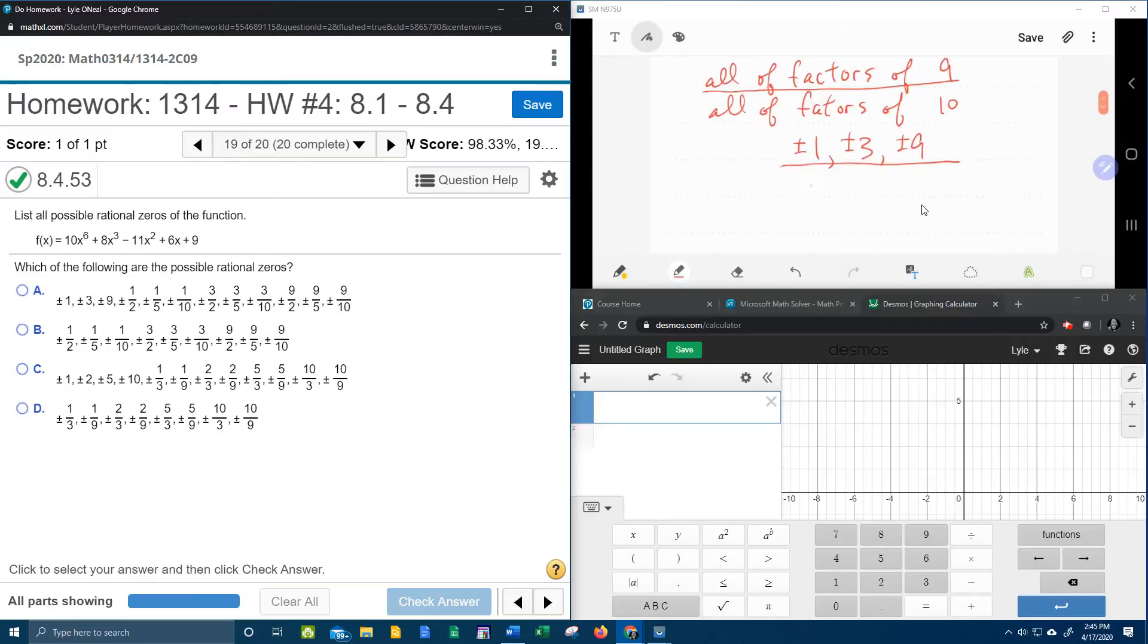Now, factors of 10, plus or minus 1. 1 goes into 10 evenly. 2 goes into 10 evenly. So does 5. And so does 10. So these are all of the factors of 10. And so now what I want to do to find all of the possible rational zeros is look at every possible combination of these.